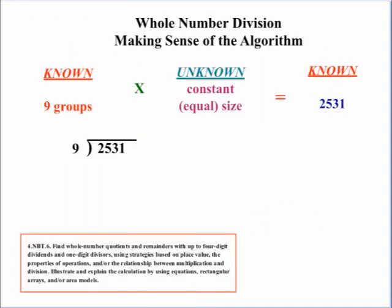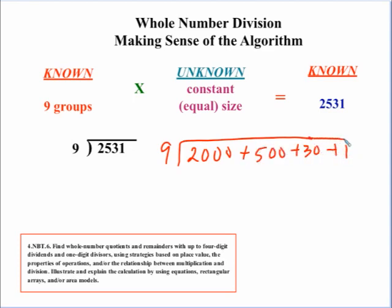Let's try one more example. The standard calls for up to a 4-digit dividend. So, let's try 2,531 as our total. We want 9 groups, so we need to find the size of the group. Again, let's forego the typical standard algorithm. And, let's do this based on place value. So, we're going to divide 9 into 2,000 plus 500 plus 30 plus 1.